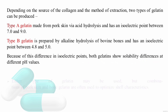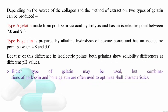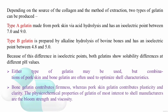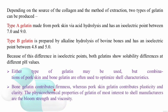This difference in isoelectric point results in both types of gelatin showing solubility differences at different pH levels. Either type of gelatin may be used, but a combination of pork and bone gelatin is often used because they have different characteristics to optimize the shell. Bone gelatin contributes to firmness, whereas pork gelatin contributes to plasticity and clarity of the capsule shell. The physicochemical properties of greatest interest for shell manufacturers are bloom strength and viscosity.